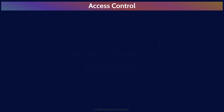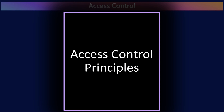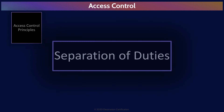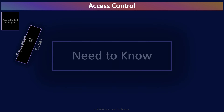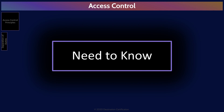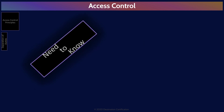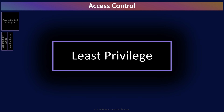There are three major principles that we apply throughout access control. The first is separation of duties, to divide up key processes into multiple parts assigned to different people. Need to know is the concept that we grant a user the minimum permissions required for them to perform their role and no more. Least privilege achieves the same outcome but from a different perspective — least privilege looks from the perspective of the asset, the system, the database — how can access to an asset be restricted to only those who absolutely require it?